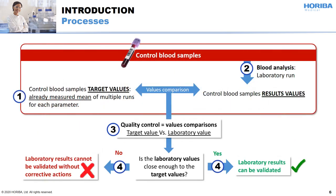The laboratory will receive control blood samples, for which the values of each parameter are known, and those values are called target values. Then the laboratory will run the control samples and compare its results to the target values. If the results are close enough to the target values, the results could be validated. If not, the laboratory will have to set some corrective actions to be closer to the target values.